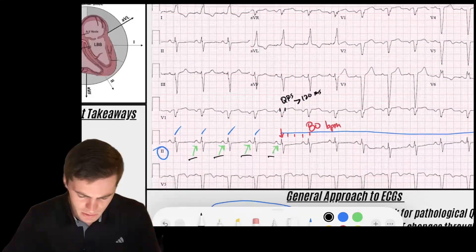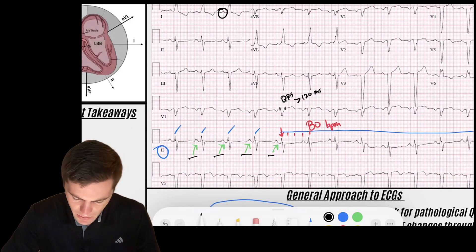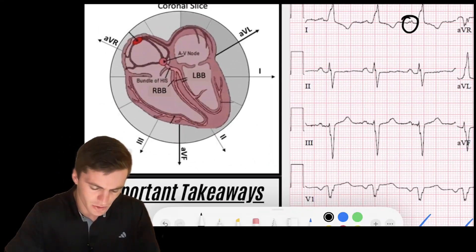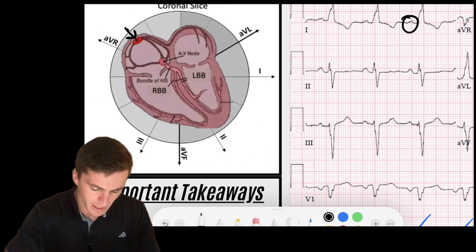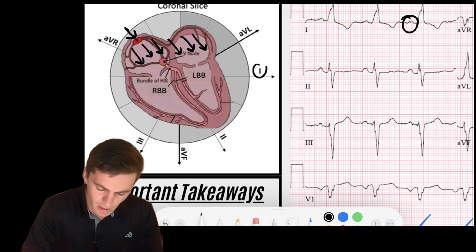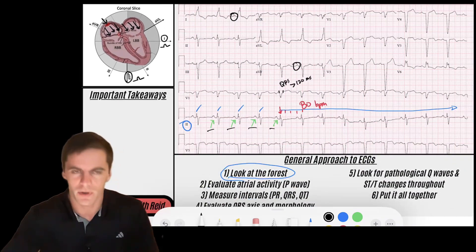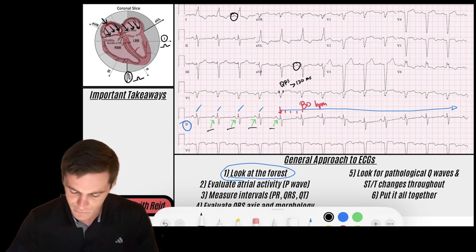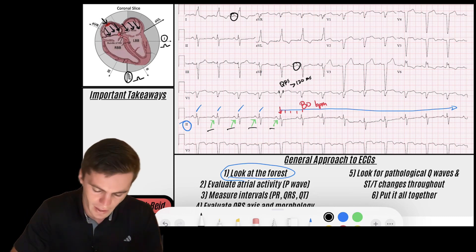The P waves appear to be upright in lead one and they appear to be upright in AVF. And so what does that tell me? Well, if my sinus node, which is sitting right here high in the right atria, depolarizes from high in the right atria throughout, it's going to go down into the left. Those P waves are going to be upright in lead one and upright in AVF. So I've got an upright P wave in one and AVF, which makes me think it's coming from the sinus node and it appears to be before every single QRS complex. So I think this is a sinus rhythm.